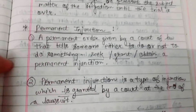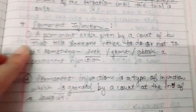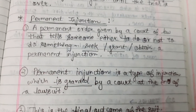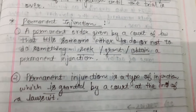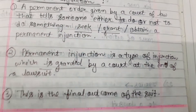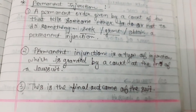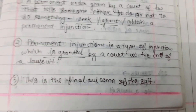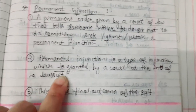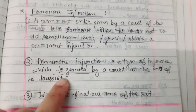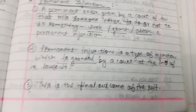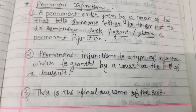The second type is permanent injunction. A permanent injunction is a permanent order given by the court of law that tells someone either to do or not to do something — one may seek, grant, or obtain a permanent injunction. This type of injunction is granted by a court at the end of a lawsuit and represents the final outcome of the suit.